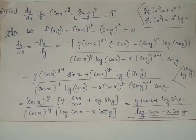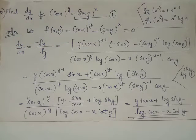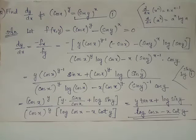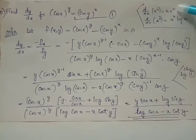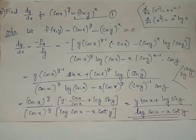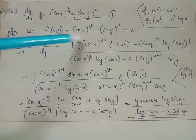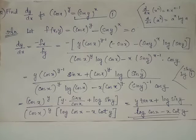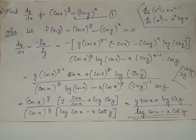Let us evaluate fx, which is the partial derivative of f with respect to x treating y as a constant. When we partially differentiate the term cos x whole raised to y with respect to x treating y as a constant, we use the rule d by dx of x raised to n equals n times x raised to n minus 1. Here in place of x we have cos x and in place of n we have the constant y. Thus we get the derivative as y times cos x whole raised to y minus 1, into the derivative of cos x which is negative sin x.